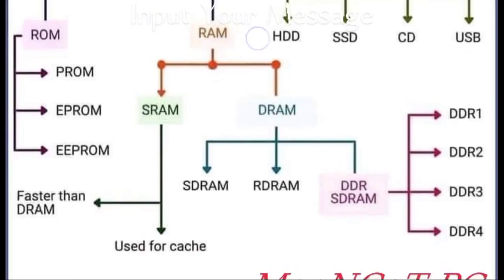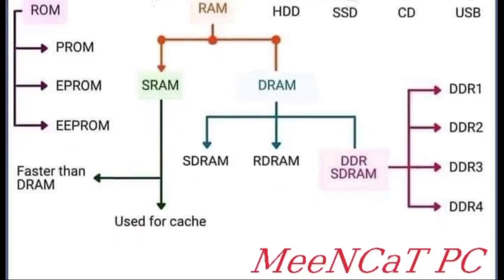RAM, random access memory, is divided into two parts: first is called SRAM and second is called DRAM. SRAM is static random access memory and DRAM is dynamic random access memory.